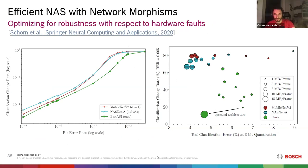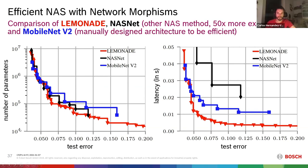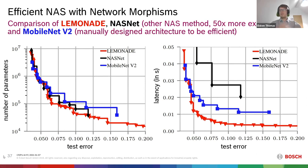Regarding MNASNet: it came out after this paper so we didn't compare to it yet. It's a similar approach but not truly multi-objective — they scalarize the objective function using a weighted sum or weighted product of different objectives, rather than optimizing dimensions independently. That's a different approach with its own pros and cons.